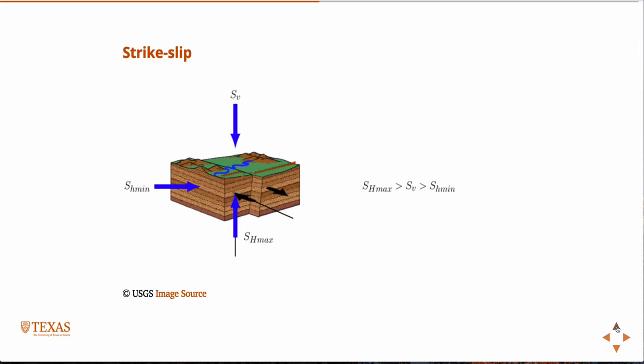But what I didn't want you to think is that somehow SH max has to be aligned with the fault in some way. It could be in any plane of the horizon, right?